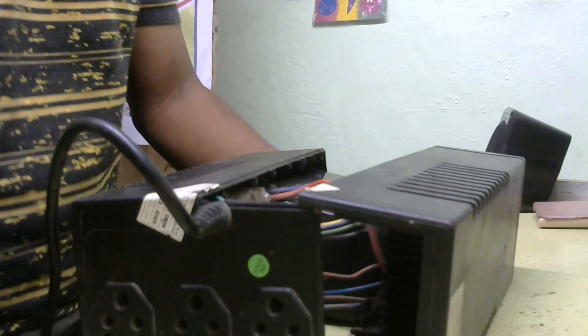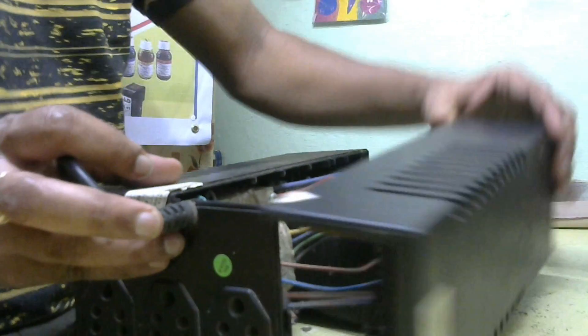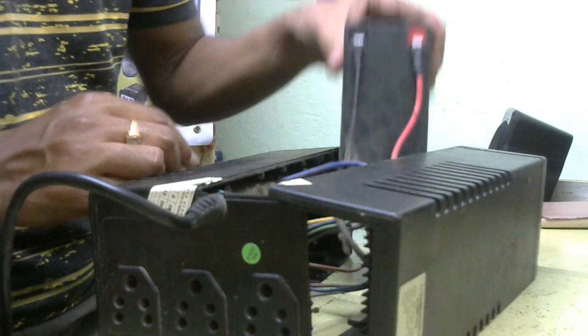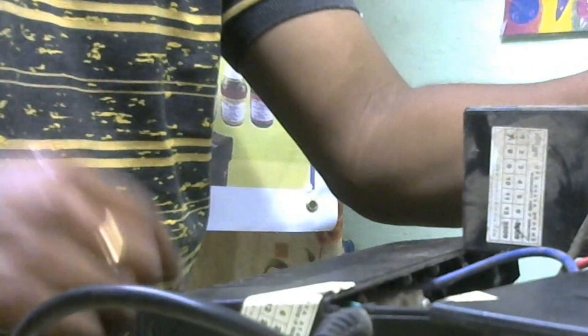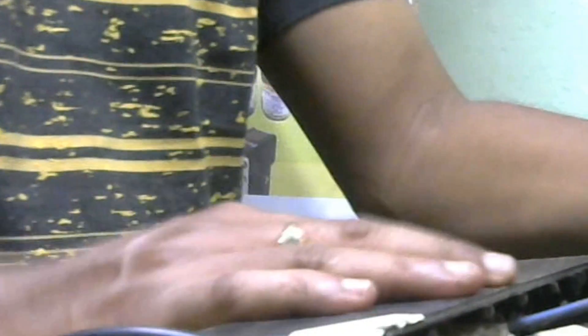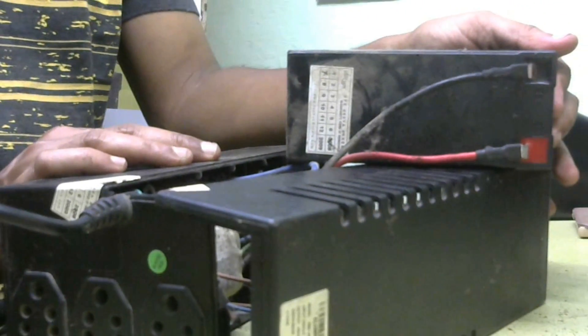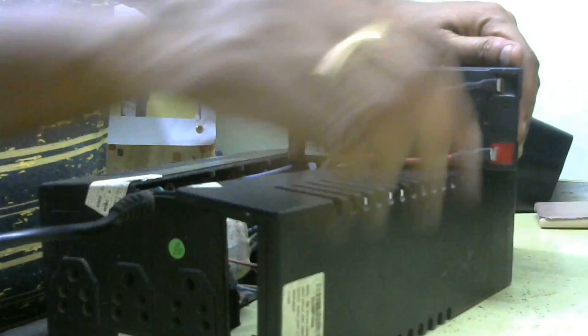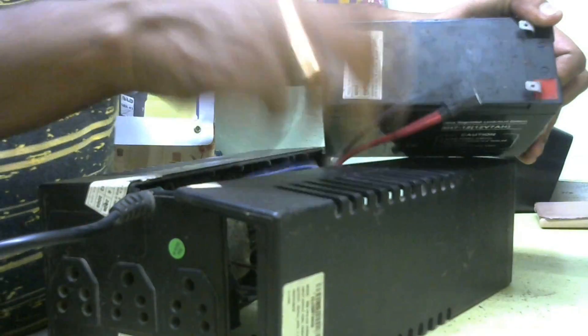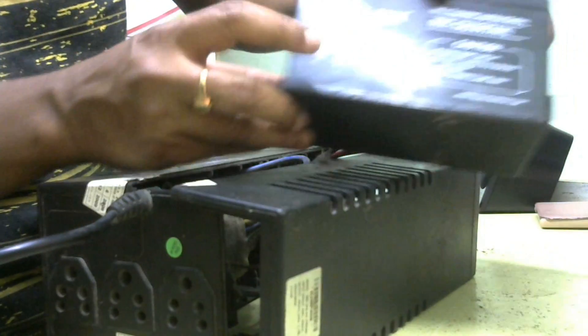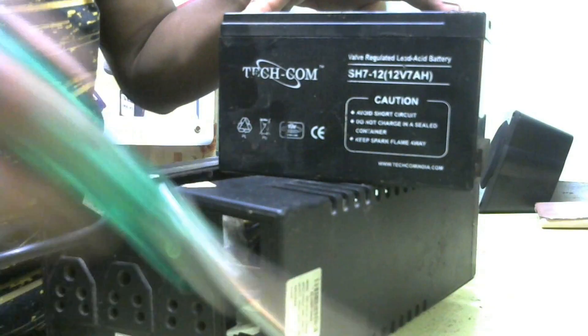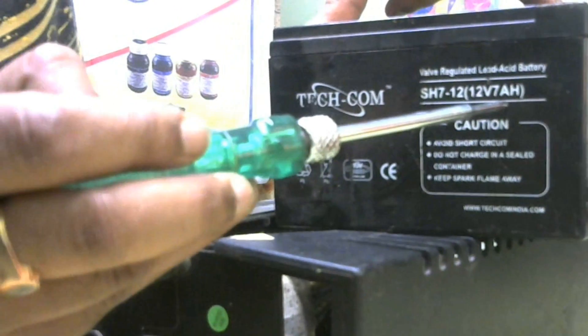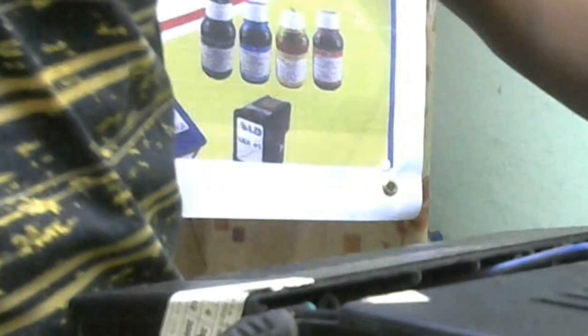Now I will explain the inner parts. This is the battery - a 12 volt, 7 ampere per hour battery. The red color is the positive probe, black is the negative probe. First I will check this battery.